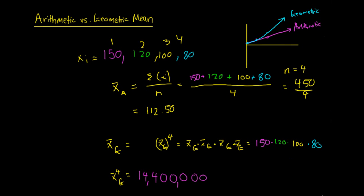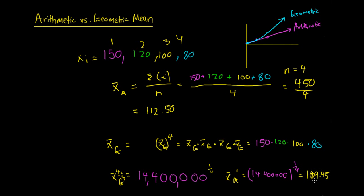So to find x̄_g, we take both sides to the power of one quarter. That means x̄_g is equal to 14,400,000 to the power of a quarter (i.e., the fourth root). Working that out, our geometric mean is equal to 109.45. That's how we work out our geometric mean — we take these four numbers, multiply them together, and then raise it to the power of 1/n, where n is the number of terms.